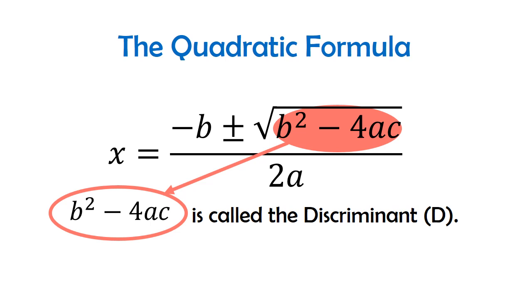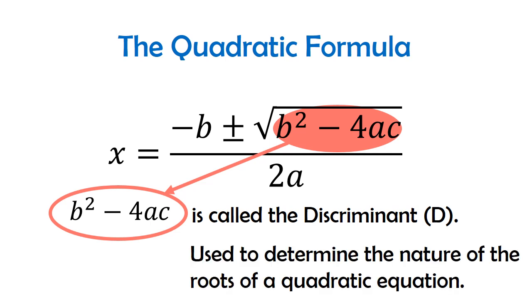The discriminant, represented by the capital letter D, is used to determine the nature of the roots of a quadratic equation. When we say discriminant, it tells us the type of roots a certain quadratic equation has.